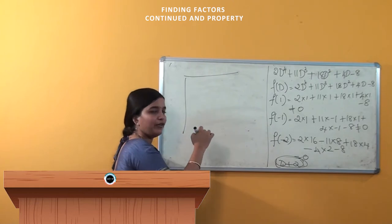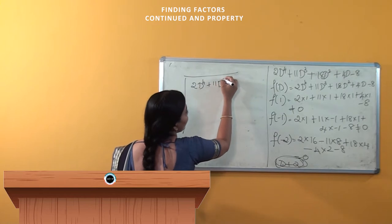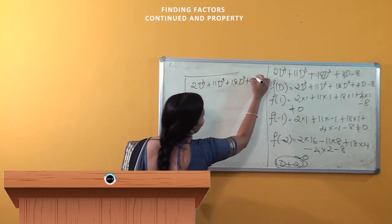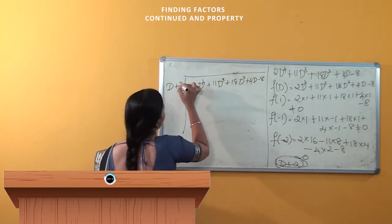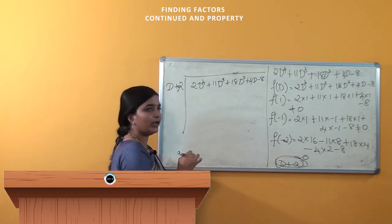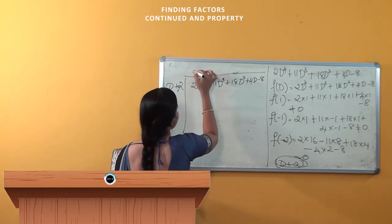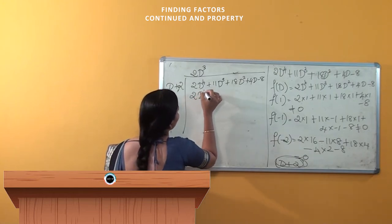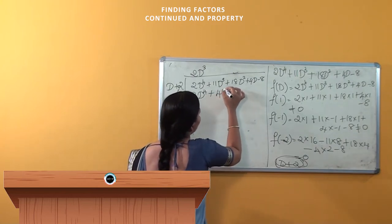We will perform division so that we can get the other roots of this equation. We have 18d² + 4d - 8, and here it is divided by (d + 2). We want d² into d⁴, so that is 2d³. We will get 2d⁴ + 4d³.